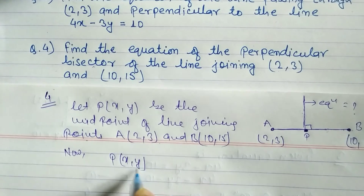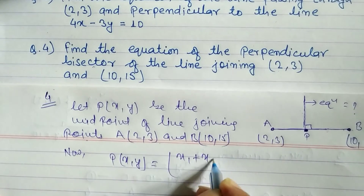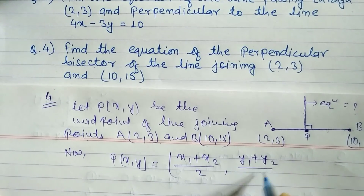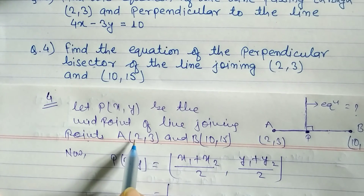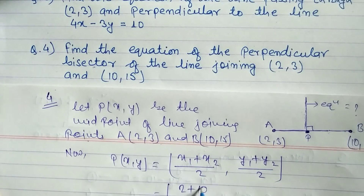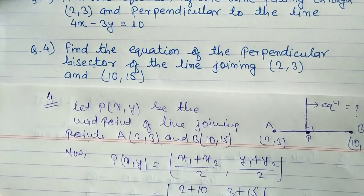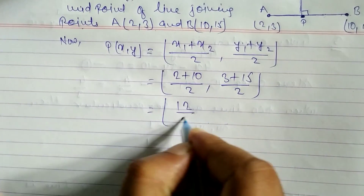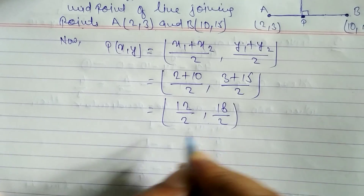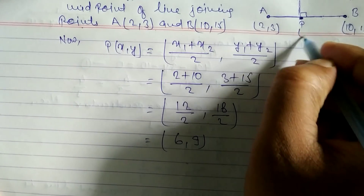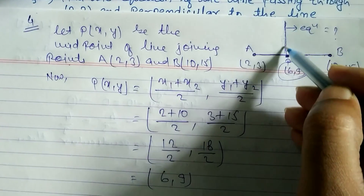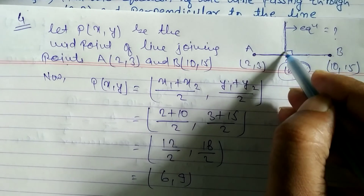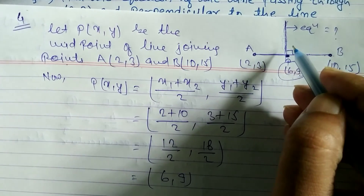Using the midpoint formula: x-coordinate equals (x1 plus x2) by 2 and y-coordinate equals (y1 plus y2) by 2. So x equals (2 plus 10) by 2 equals 12 by 2 equals 6, and y equals (3 plus 15) by 2 equals 18 by 2 equals 9. So the midpoint P is (6, 9), and the perpendicular bisector passes through this point.